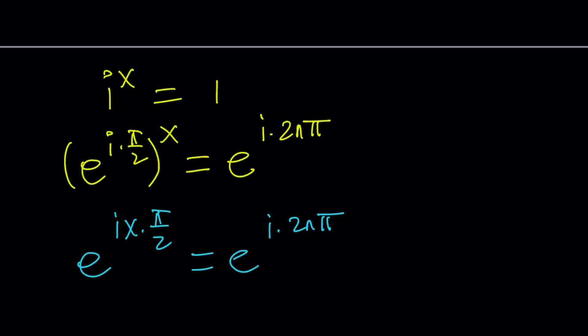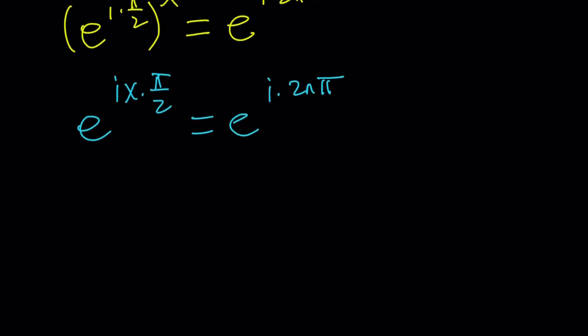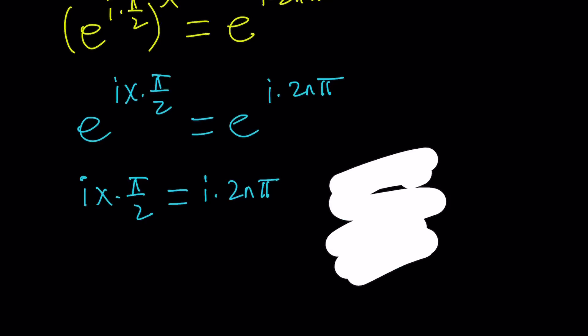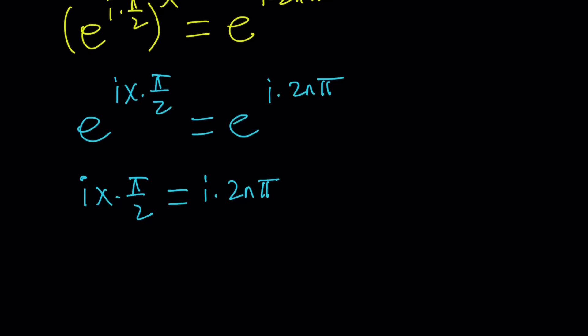So we can write this as e to the power i x times pi over 2. I just put the x together with the i. And that is equal to e to the power i times 2 n pi. Now since the bases are equal, we could actually natural log both sides, or you can just say if the bases are equal, then the exponents are equal. And we get i x times pi over 2 equals i times 2 n pi. By the way, writing this way is not the only way to do it. You could also write it as i times x times pi over 2 or just i x pi over 2. So this is our equation in the most simplest form.